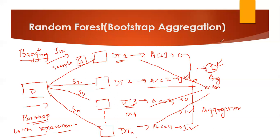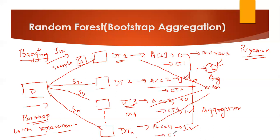What happens when the problem is a regression problem? In classification, if most models predict 1, the output is 1. But in a regression problem, there are no zeros or ones — only continuous values. Decision Tree 1 gives continuous value CT1, Decision Tree 2 gives CT2, up to CT-N. The mean of all these continuous values is taken as the final output for regression. In classification, majority vote is used; in regression, the average of all outputs is taken.